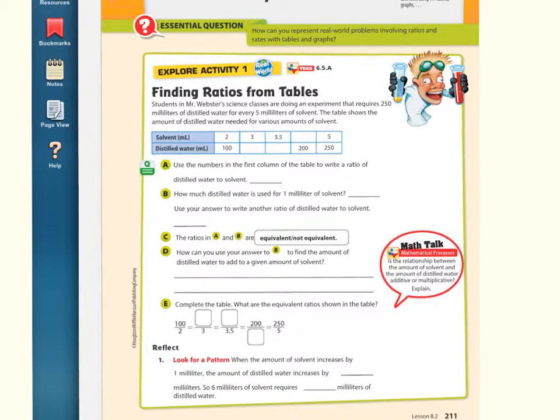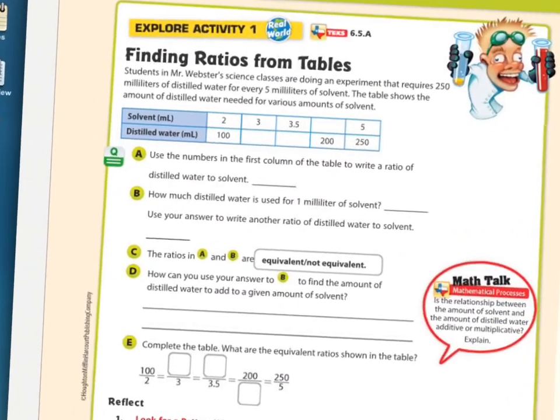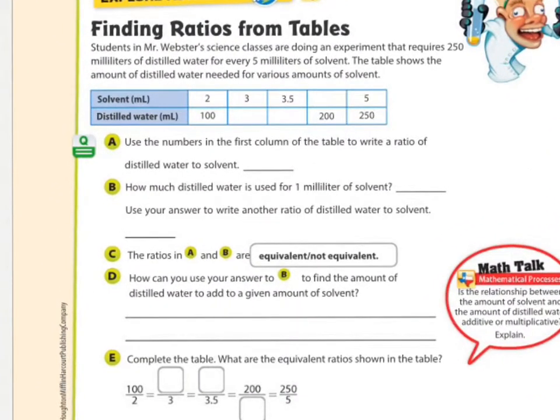We're doing something that you're very familiar with. We're going to be finding ratios from tables. You already know how to make the tables from before, so now we're going to read information from the table to answer questions.